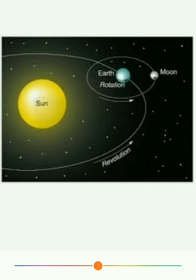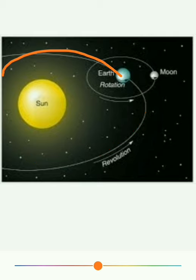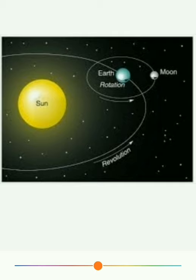But the Earth revolving around the Sun — this type of movement we call revolution. When the Earth rotates on its axis from west to east, that is rotation. If the Earth revolves or orbits around the Sun, we call that revolution.